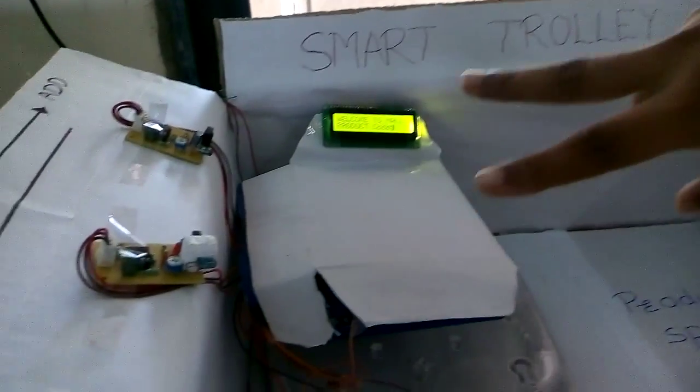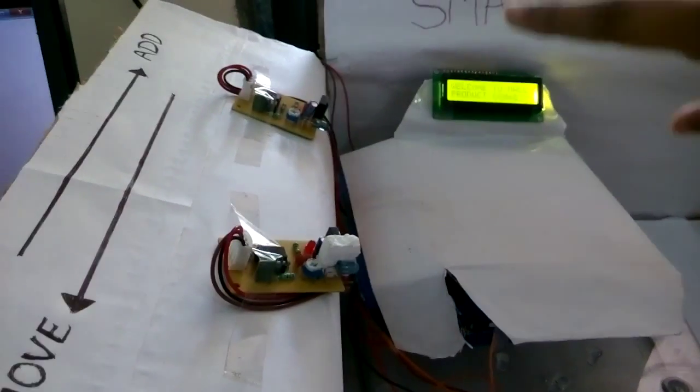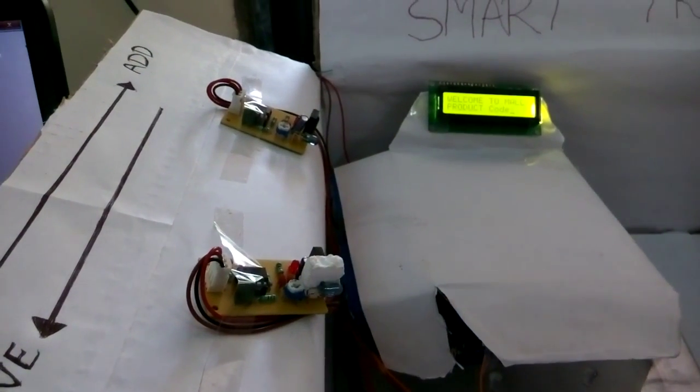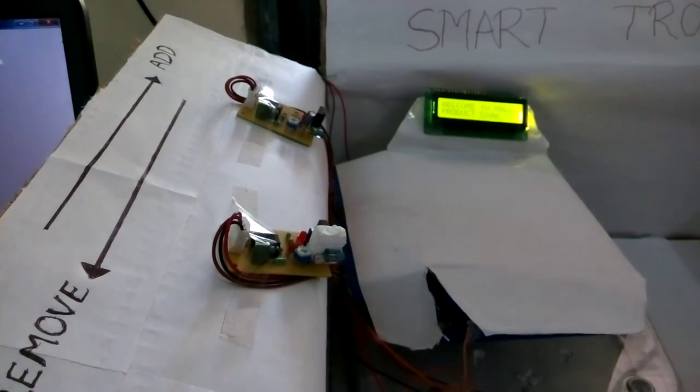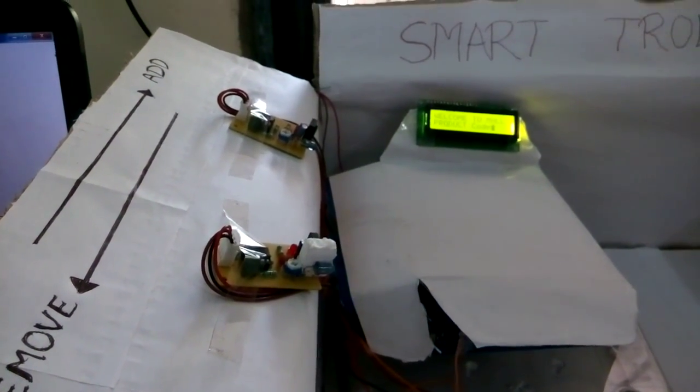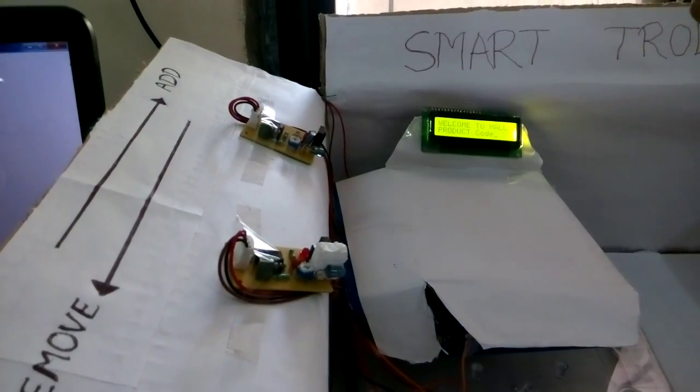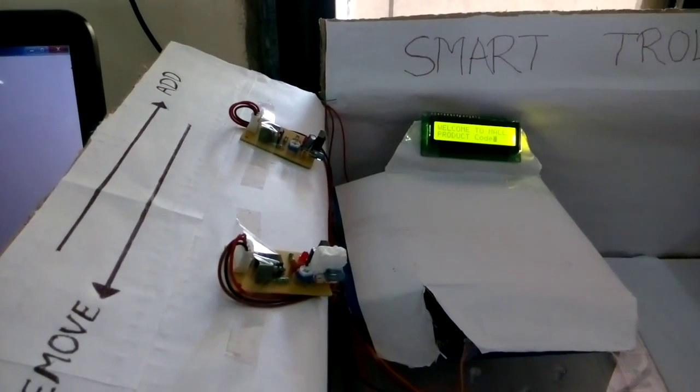These two IR sensors are used for maintaining and updating the count. If we cut these two sensors in one sequence, then the product will be added, that is the count is incremented. When we cut the sensors in opposite sequence, the count will be decremented.